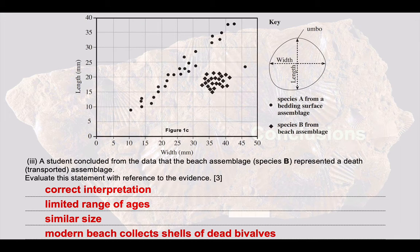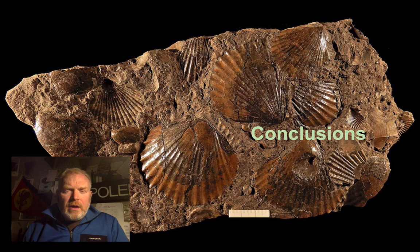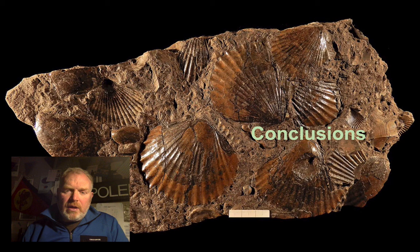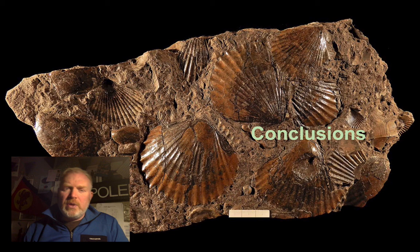To conclude: bivalves give us lots of interesting data, particularly on the relationship between the morphology of the shells and the way that they live. The fact that they're extant — they still live today in a huge range of environments — means that we can look at modern bivalves and interpret the features we find in fossil bivalves, because they're the same as the ones we see today. So we can be very confident in interpreting how these organisms lived and how they died.